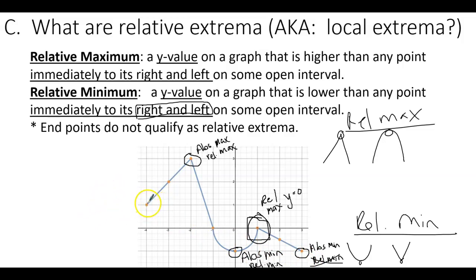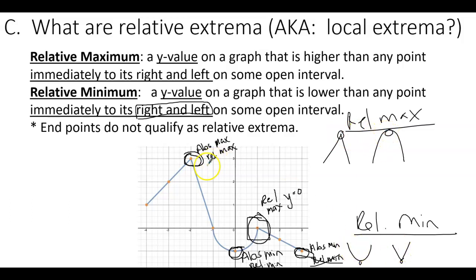Let's review. Absolute extrema are the highest or lowest y values on the graph. Relative extrema look like the top of an upside-down cusp or the top of a curve for maxima, or the bottom of a curve or bottom of a cusp for minima. One key difference: relative extrema cannot be at endpoints, whereas absolute extrema can be at endpoints.